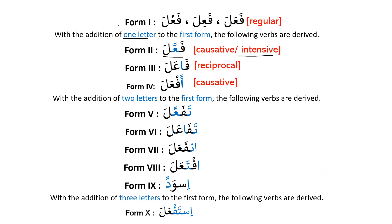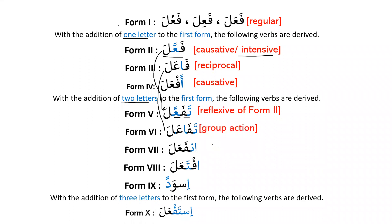Moving to verbs with two extra letters: Form 5 tafa'ala has ta and tashdeed — it is reflexive of Form 2. Form 6 tafa'ala has a connection with Form 3 — it is reflexive of Form 3, or we can say it consists of group action where everyone performs the action together and everyone is the doer. Form 7 infa'ala is passive, or the passive of Form 1.